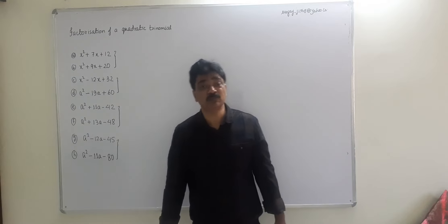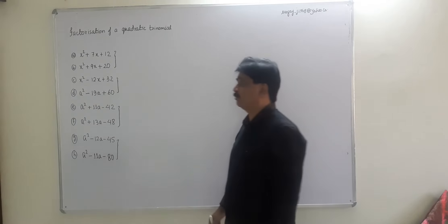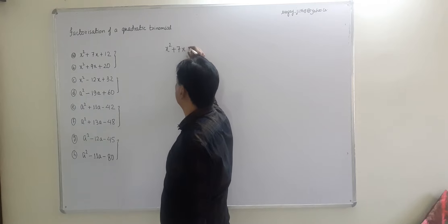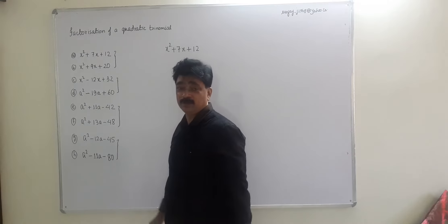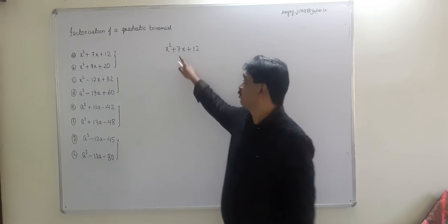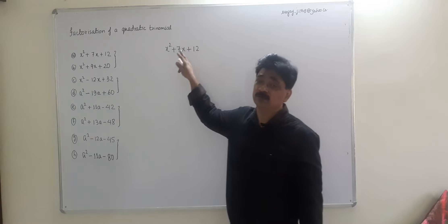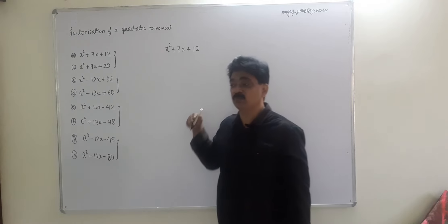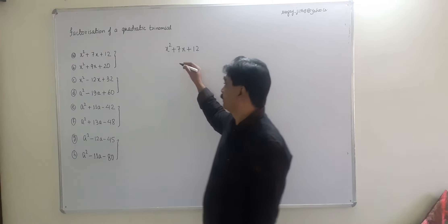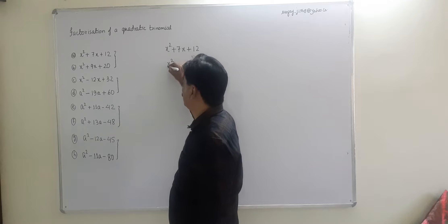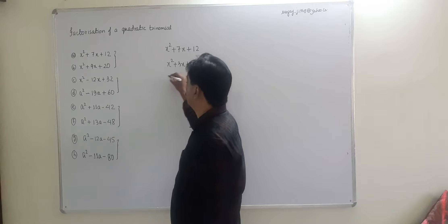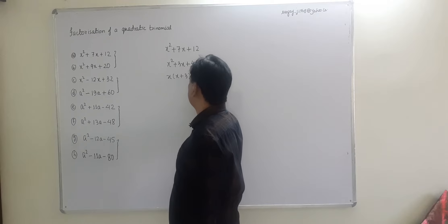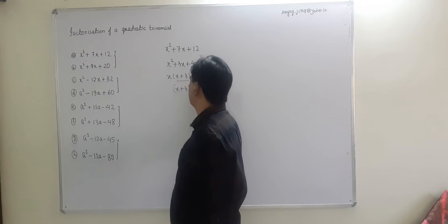For x² + 7x + 12, since c is positive, we find two numbers whose sum is seven and whose product is twelve — both numbers will have the same sign. We split: +3x + 4x. Then x(x + 3) + 4(x + 3), giving us (x + 4)(x + 3).